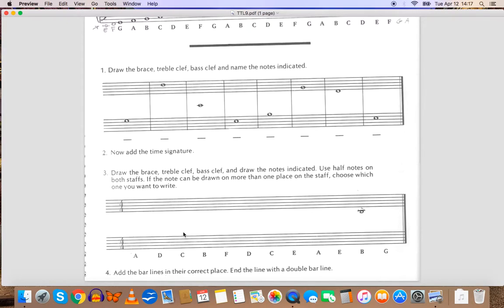Some instances, there are more than one place to put, for example, a C. You can put it here on this space, or you can put it here on this space. Just choose one. Then, I want you to add the bar lines to this activity in the correct place. So this is 4-4 time signature. You're going to count out four beats, and then draw a bar line. Four beats, draw a bar line, so on and so forth.